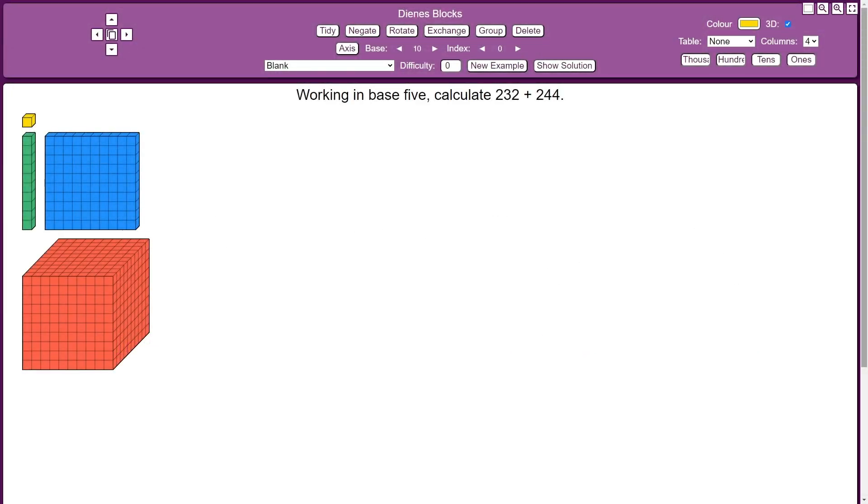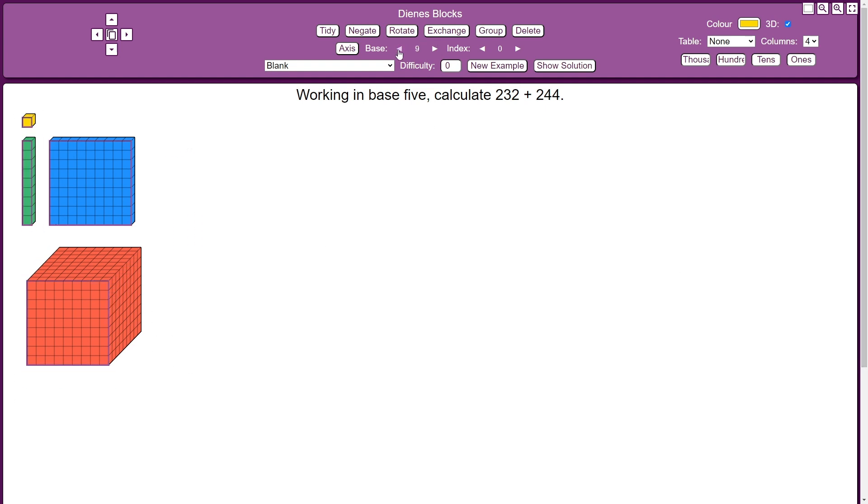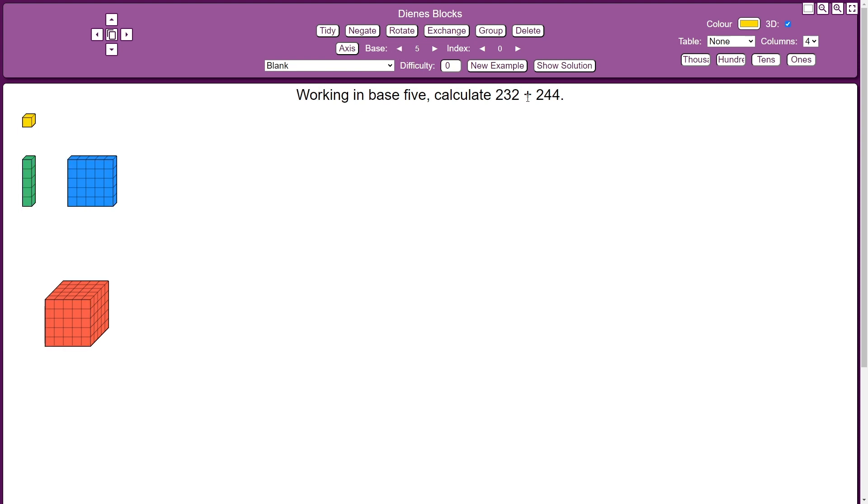Let's use Dean's Blocks to model an addition in base 5. The first thing I'm going to do is select all the blocks and reduce the base down to 5, and then build these two numbers here.